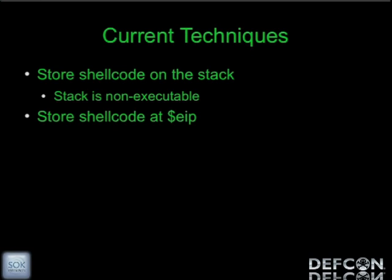You could store your shellcode at the current instruction pointer, EIP. That would work, however it mucks up the original code. So you have to back up the code that was going to run, override it with your shellcode, and then after your shellcode runs, restore the backup. In the previous talk — the JewGod talk — that's what the author did. But we're going to dive a little bit further into a new technique.